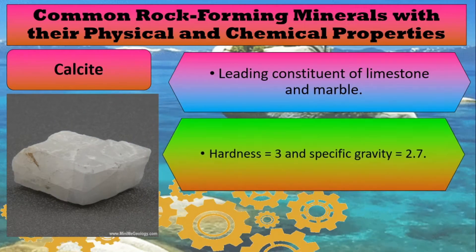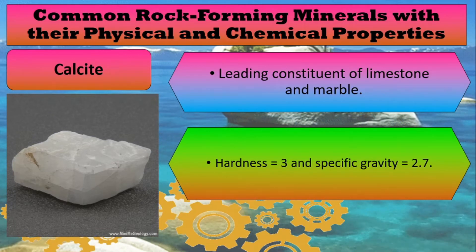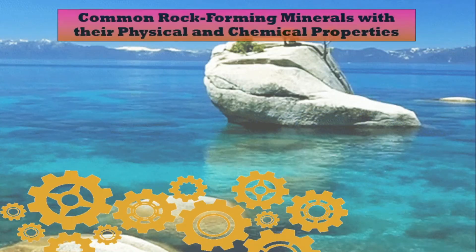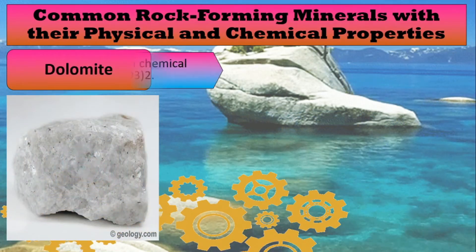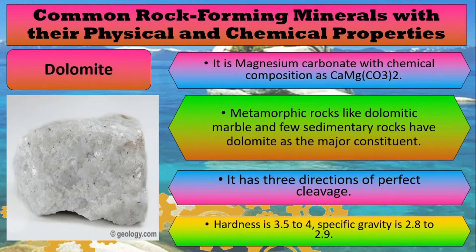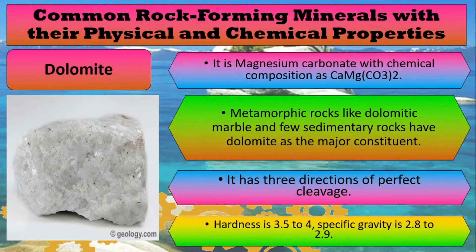Next, we have calcite. Calcite is a leading constituent of limestone and marble. Calcite has a hardness of 3 and a specific gravity of 2.7. Dolomite is a magnesium carbonate with a chemical composition of CaMg(CO3)2. Metamorphic rocks like dolomitic marble and some sedimentary rocks have dolomite as the major constituent. Dolomite has three directions of perfect cleavage, a hardness ranging from 3.5 to 4, and a specific gravity ranging from 2.8 to 2.9.